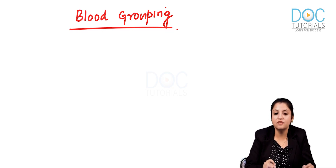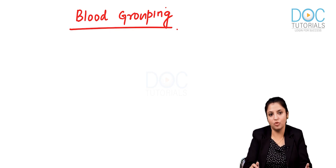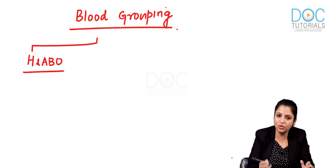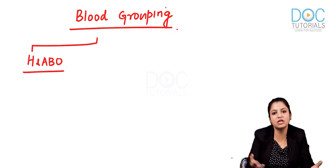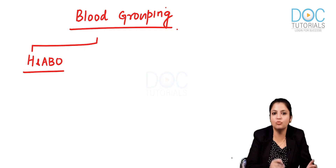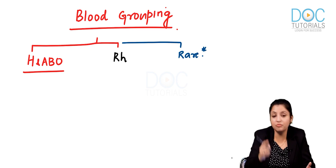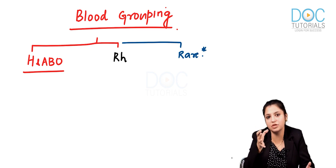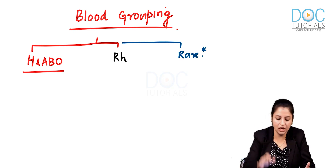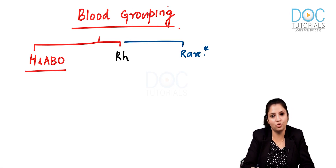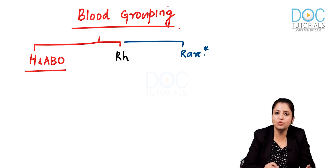To understand blood grouping basics, you should know that we have many blood group systems in our body. We'll predominantly talk about H and ABO today — ABO blood group system, where H is the precursor. Second is your RH blood group system. Third are some rare blood group systems with peculiar clinical features. We'll also discuss testing protocols in blood banking.